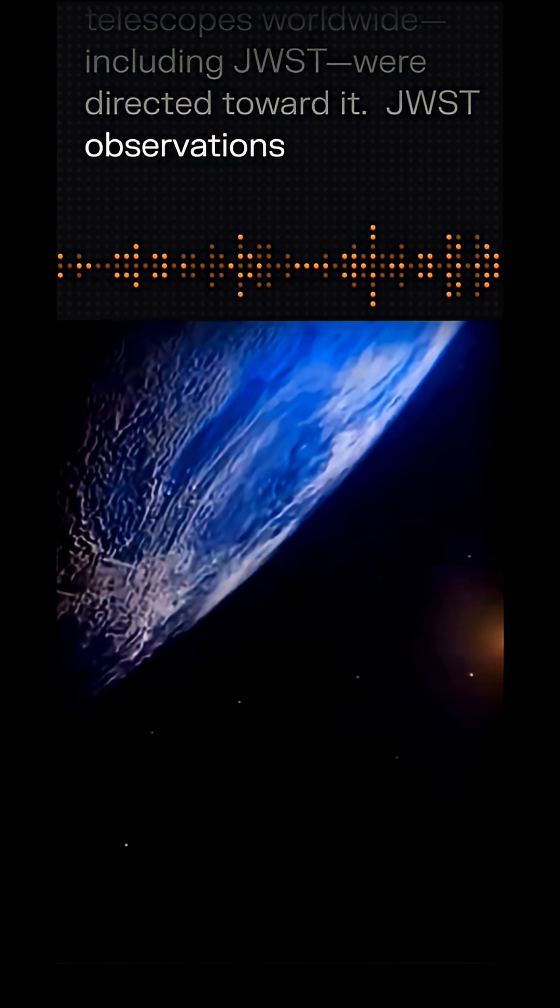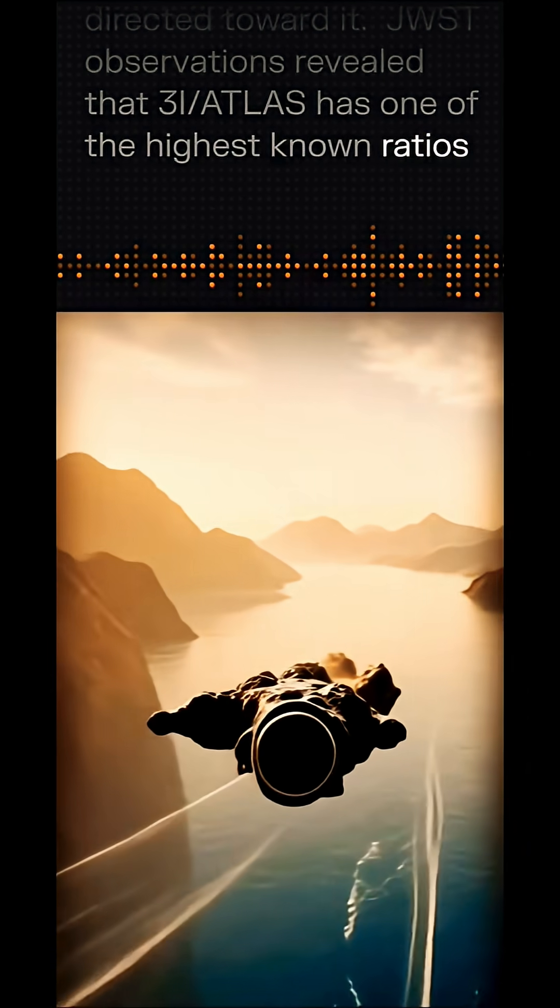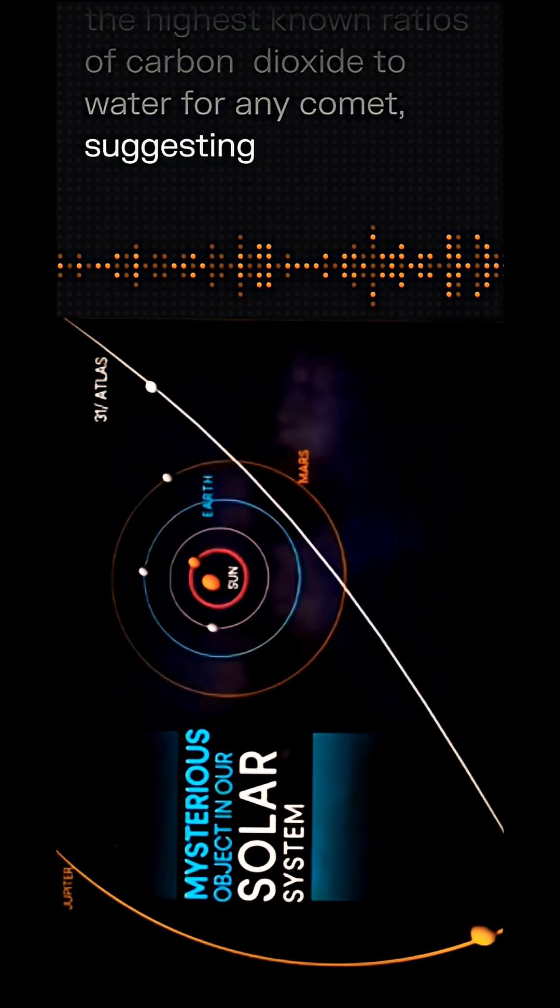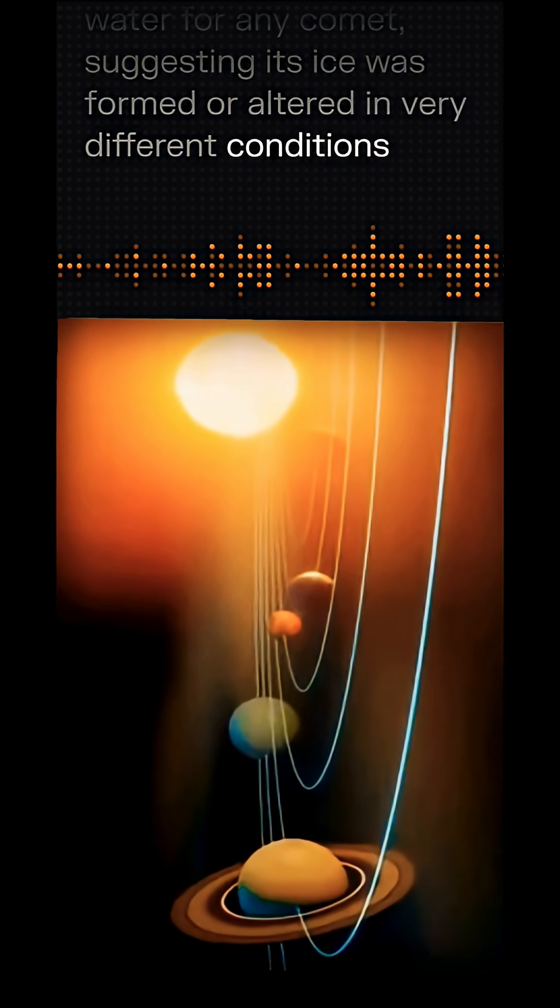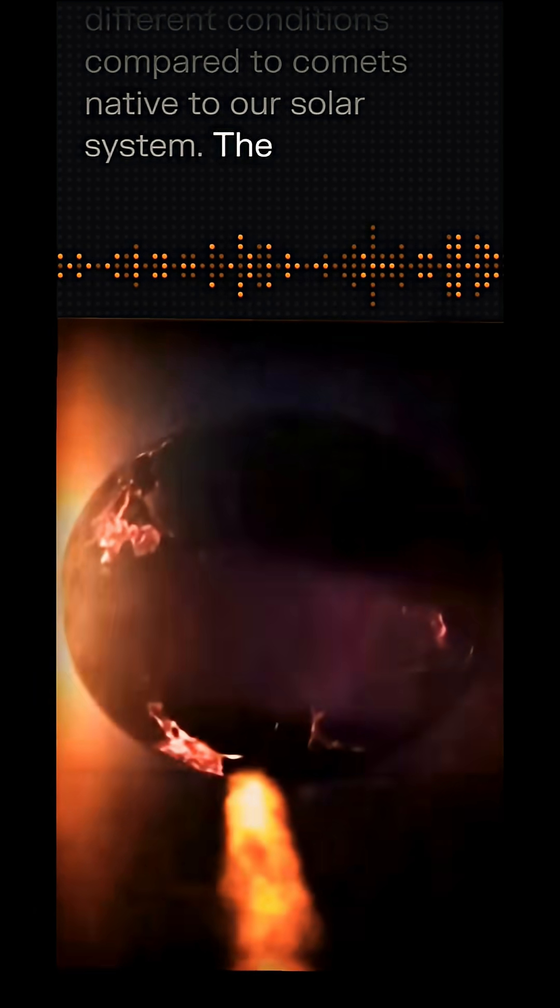JWST observations revealed that 3I Atlas has one of the highest known ratios of carbon dioxide to water for any comet, suggesting its ice was formed or altered in very different conditions compared to comets native to our solar system.